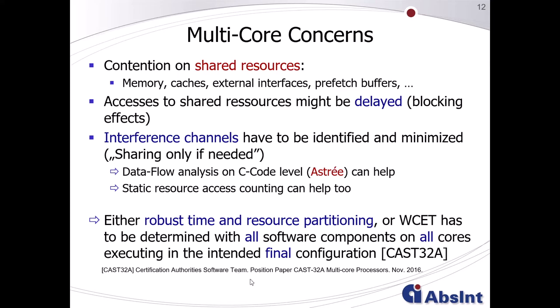The experts from the Certification Authority Software Team CAST propose in their position paper about multicore processors that either you have robust time and resource partitioning, or the worst-case execution time has to be determined with all software components running on all cores in the intended final configuration. Absint has solutions for both scenarios.